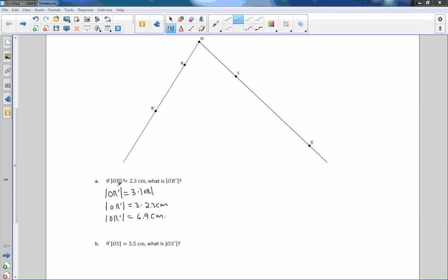Okay, so I'm going to label this diagram as I go. So here is OR, and we were told it was 2.3 centimeters. 2.3 cm is from here to here. And OR prime is this one, and that is 6.9 centimeters.